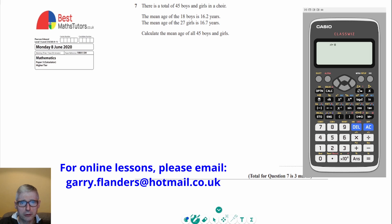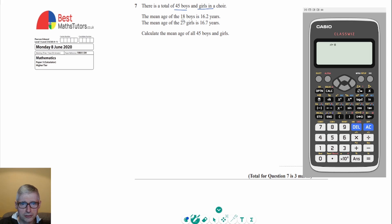So it says there are a total of 45 boys and girls in a choir, and the mean age of the boys, of 18 boys, is 16.2 years.